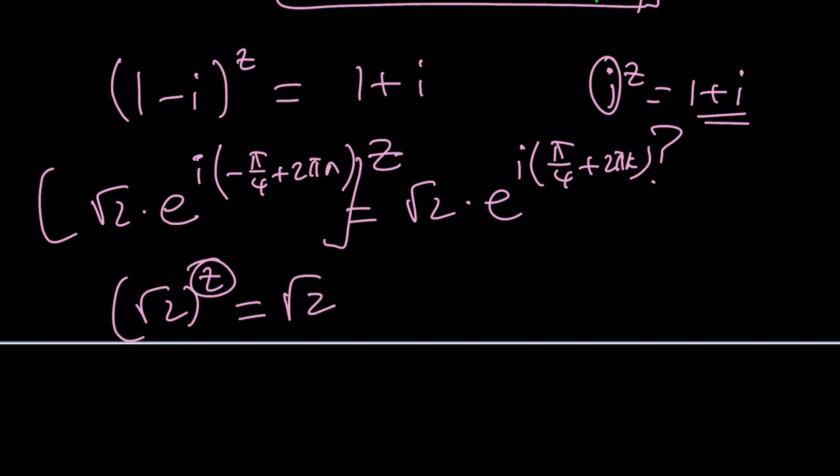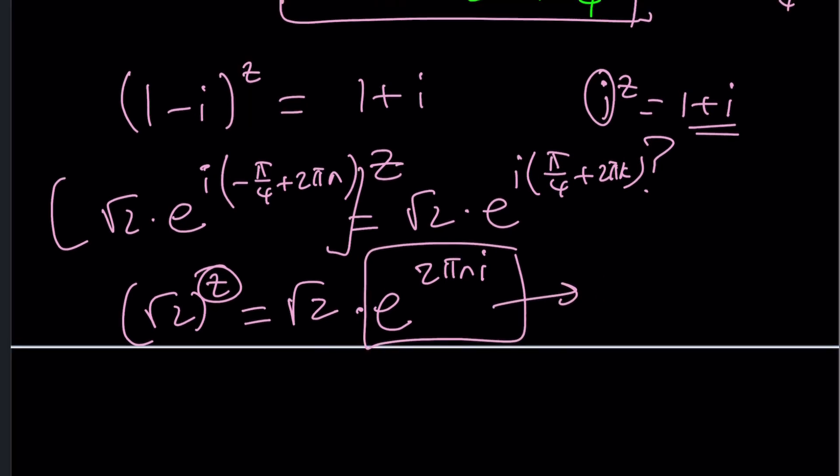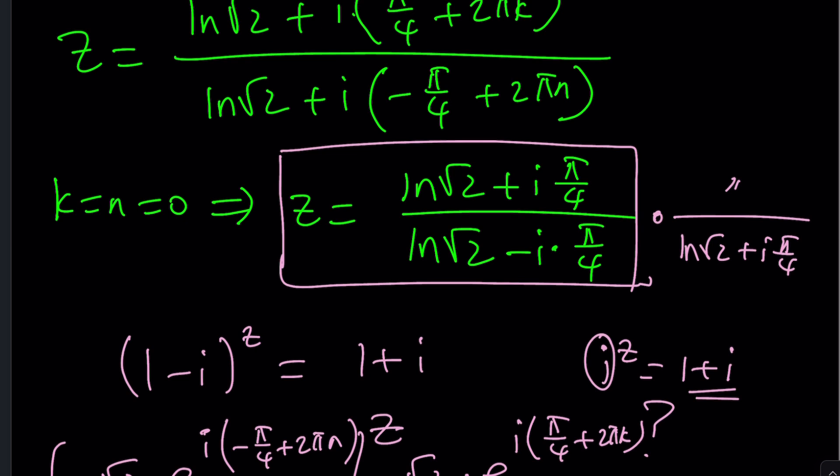One thing to keep in mind, though, you're able to multiply both sides by e to the power 2 pi n i, because this represents 1 in the complex world. So when you do the natural log, that should give you an additional 2 pi n i, which I think will work.